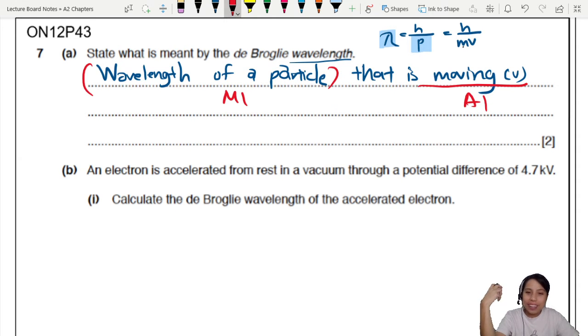Next, here's the equation. An electron is accelerated from rest in a vacuum through a potential difference of 4.7 kV. This is our potential difference. So you could think of parallel plates, electric field, accelerated from rest, initially zero. Calculate the de Broglie wavelength of the accelerated electron means after the 4.7 kV. So what is the wavelength?